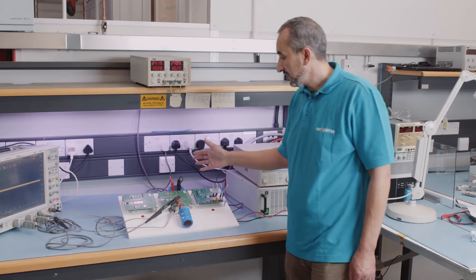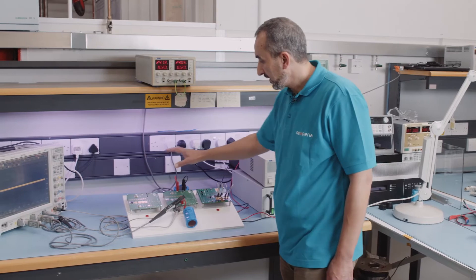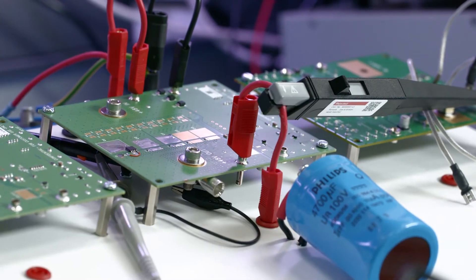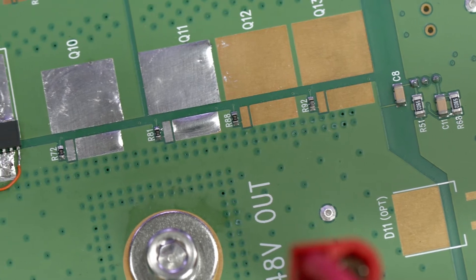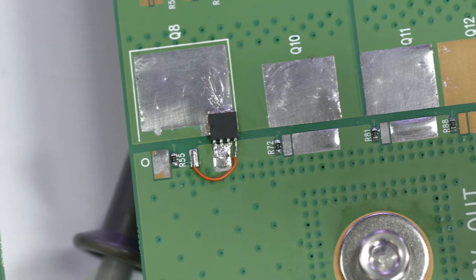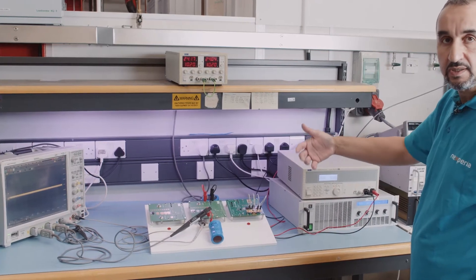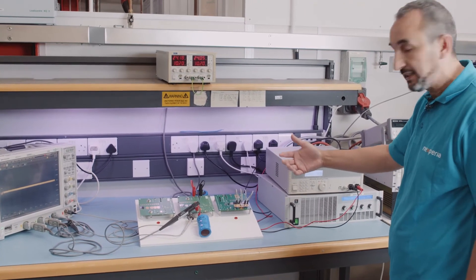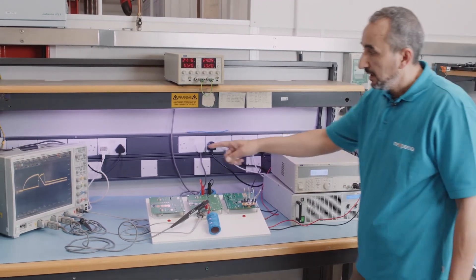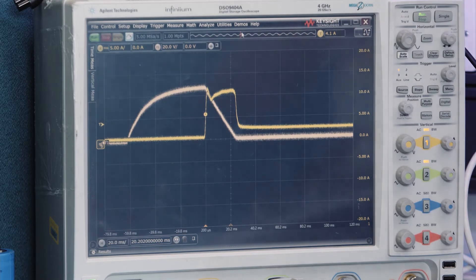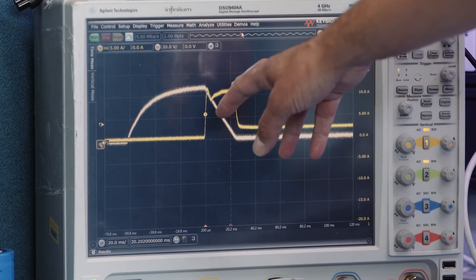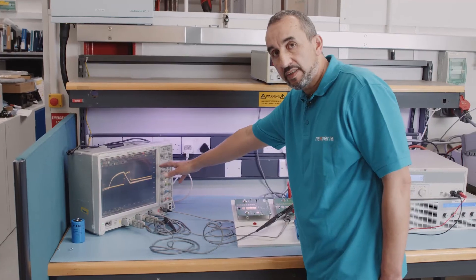Moving on to the second board, we just moved everything exactly the same to the second board where the LFPAK56E is implemented. Again, we're going to apply power and the board will control the input, the output, and turn on the MOSFET accordingly.